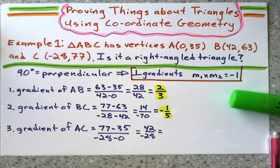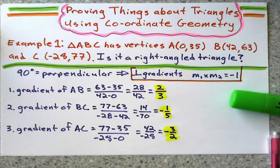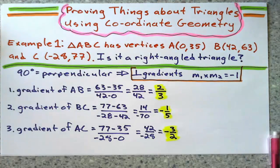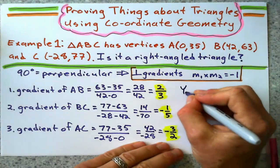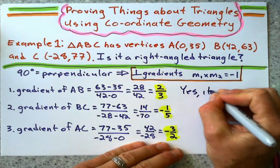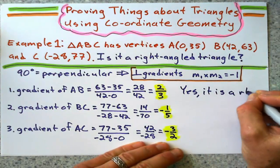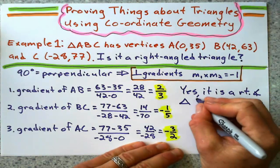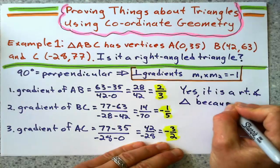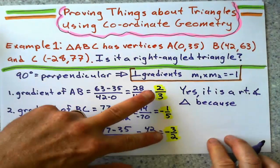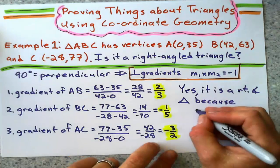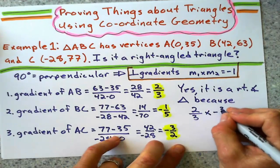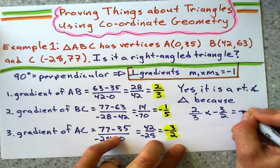because I know that simplifies down to... Now we're not done yet because we have to write our conclusion. Now we're going to say, yes, it is a right-angled triangle because these two gradients multiply to get negative 1 because 2 thirds times negative 3 halves equals negative 1.